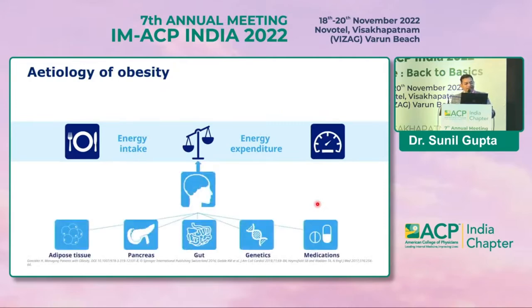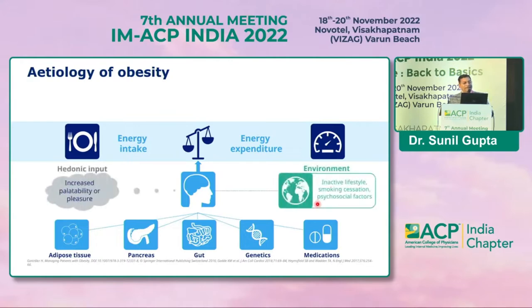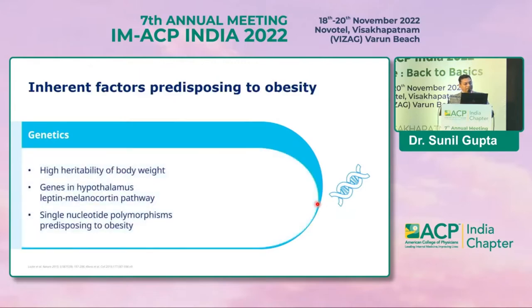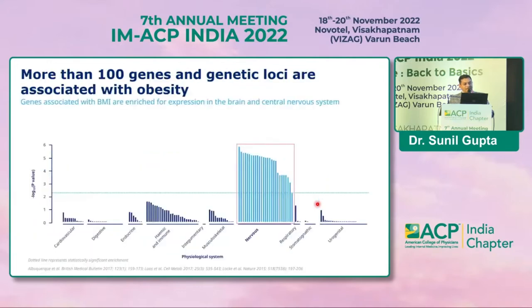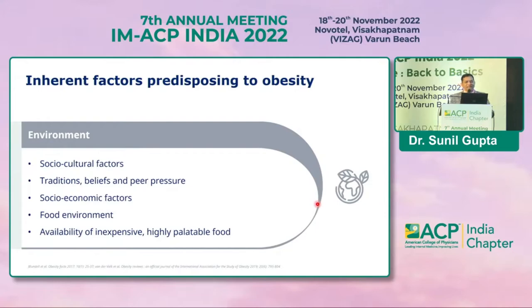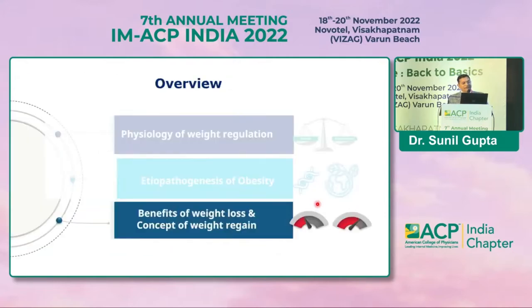Energy intake and expenditure are all dictated by the brain, with different inputs coming from adipose tissues, the pancreas, the gut, and hormones like leptin, amylin, insulin, and GLP-1. Genetics and environment, medications, hedonic inputs that increase palatability, and environmental risk factors like passive lifestyle, smoking, and psychological factors all play a big role. BMI-related genes are expressed maximally in the nervous system, and our own traditions, beliefs, and socioeconomic factors also contribute.